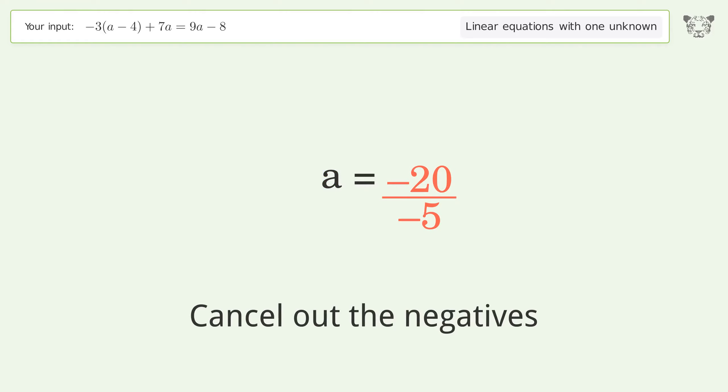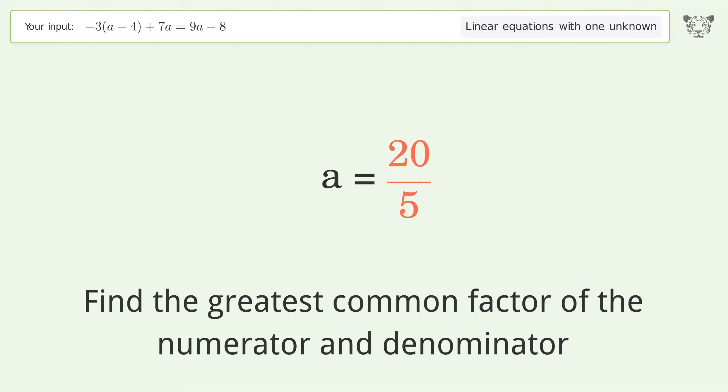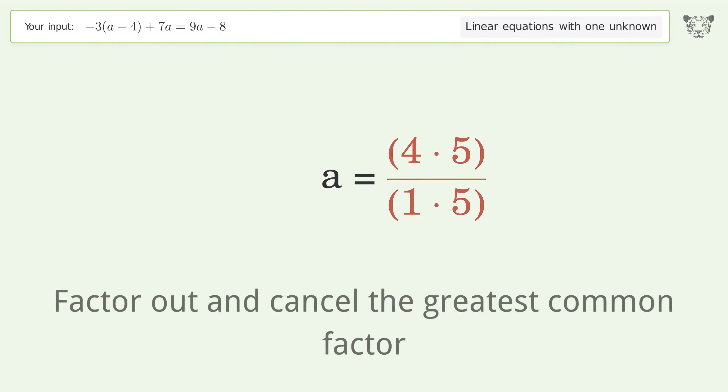Cancel out the negatives. Find the greatest common factor of the numerator and denominator. Factor out and cancel the greatest common factor.